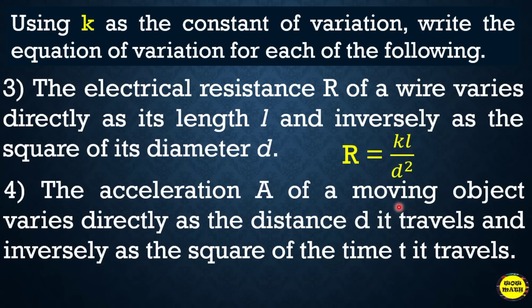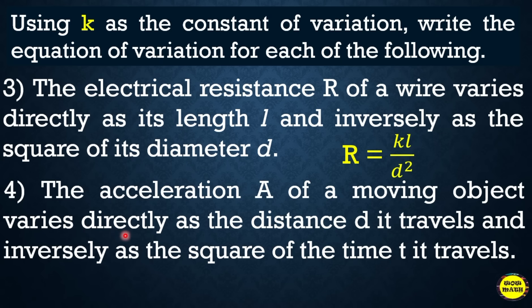Example 4: The acceleration A of a moving object varies directly as the distance D it travels and inversely as the square of the time T it travels. So that is A = KD/T², because of the squared of the time.